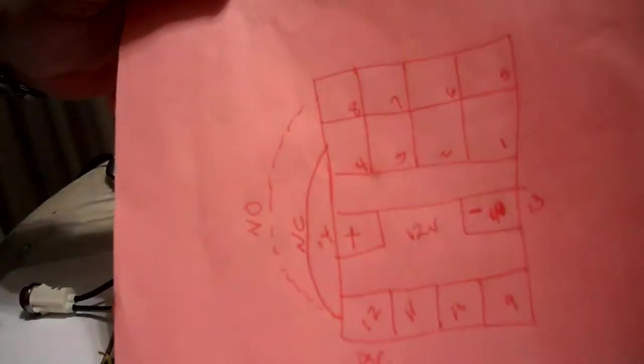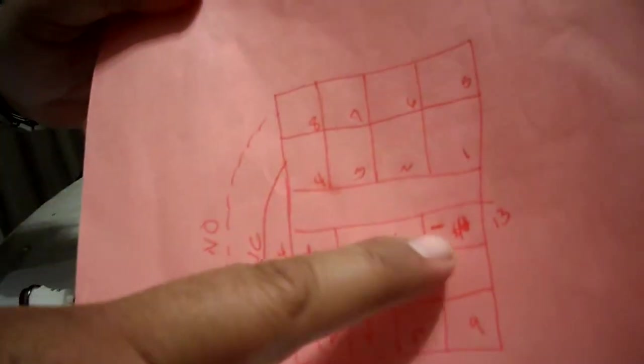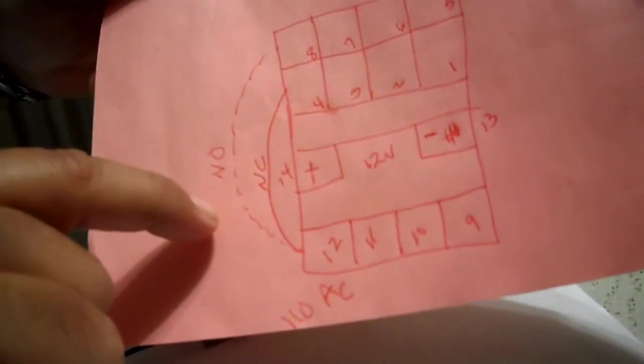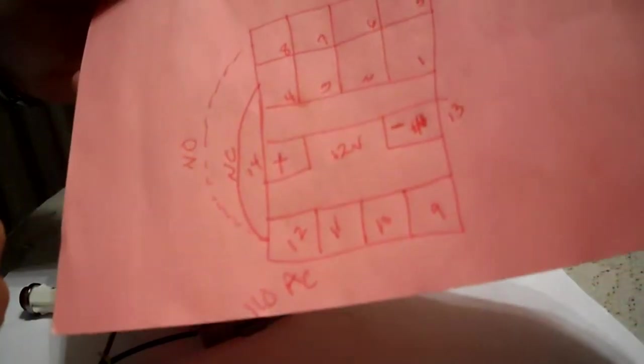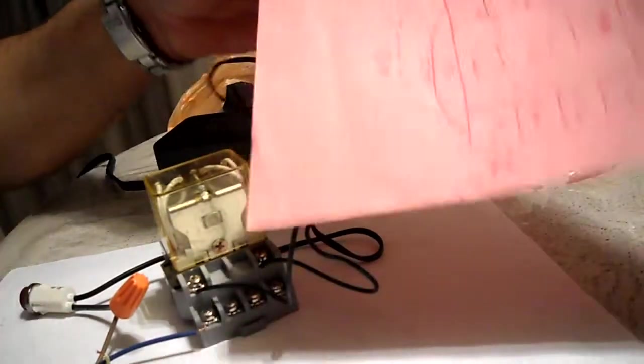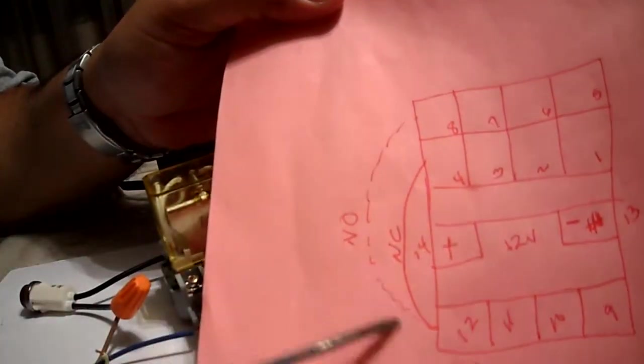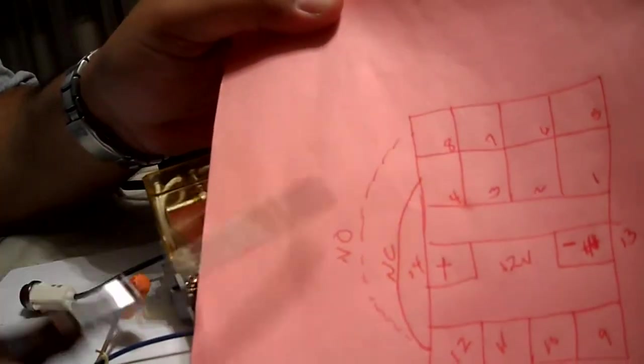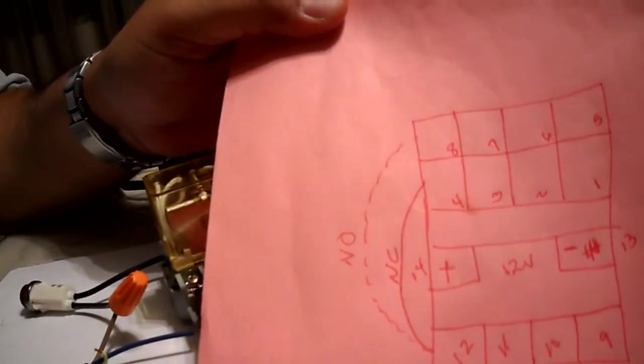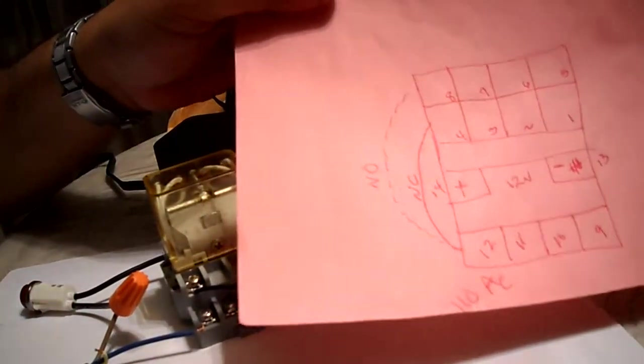So what I do is I go ahead and I draw it, positive and negative, and I number every single screw. These are the screws, the position where the screw is. And I know I have NC which is normally closed and NO which is normally open, so I get my meter and I have it on the continuity so that it'll make a sound.